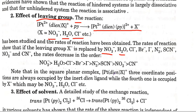The rate of reaction in this case depends on the quality of the leaving group — a good leaving group leads to a faster reaction.